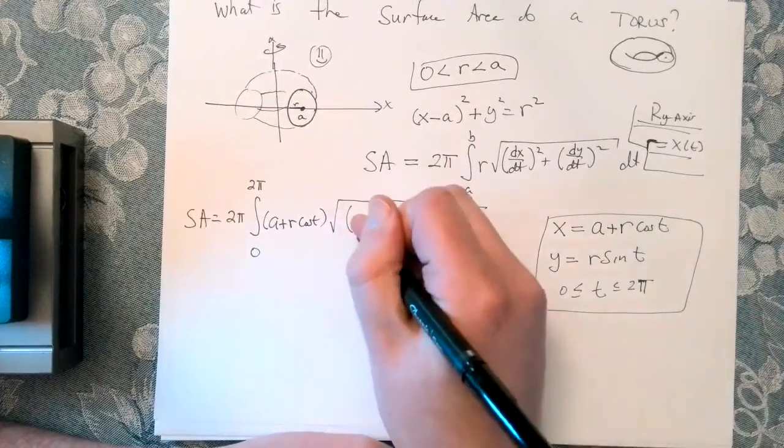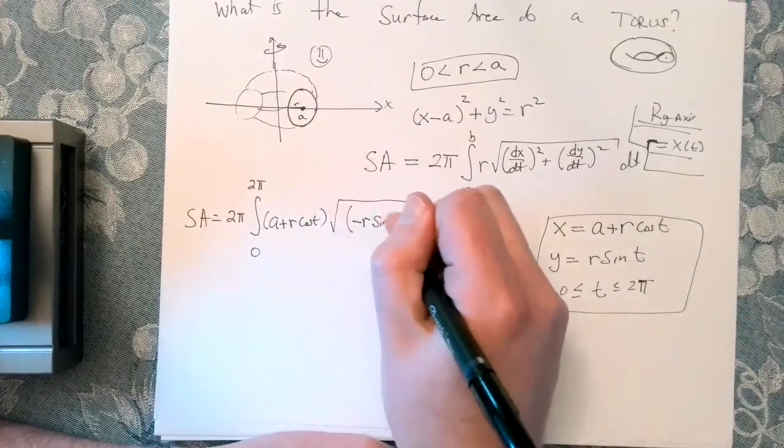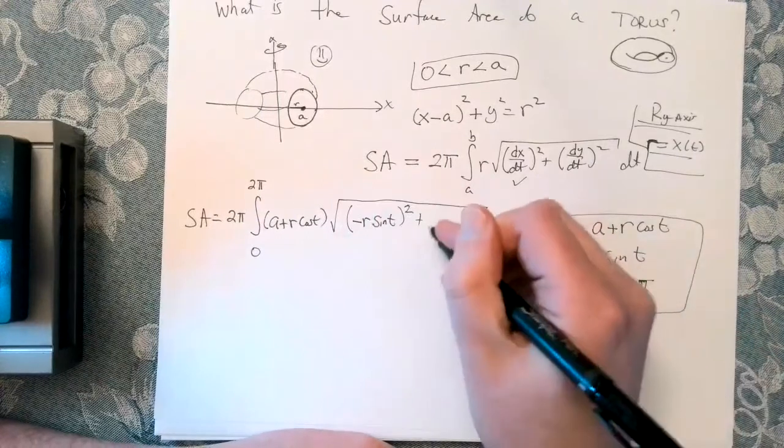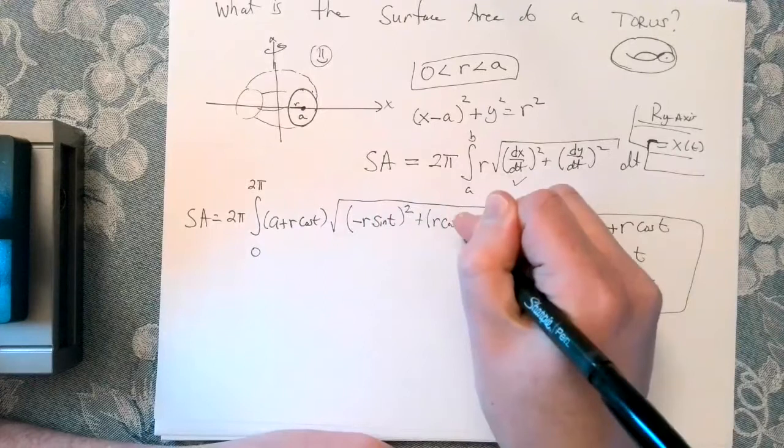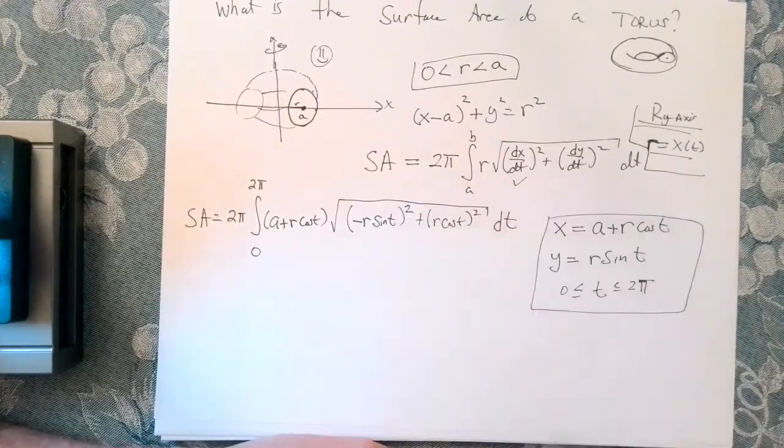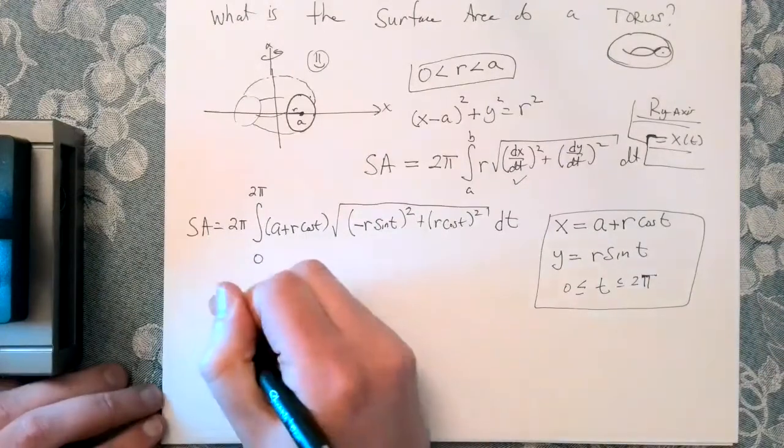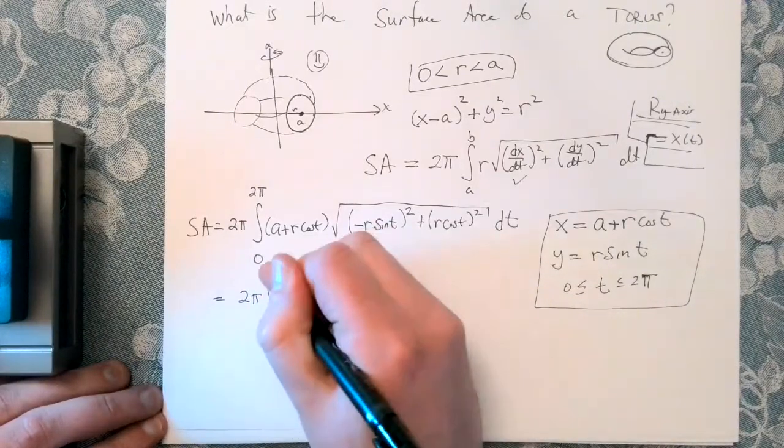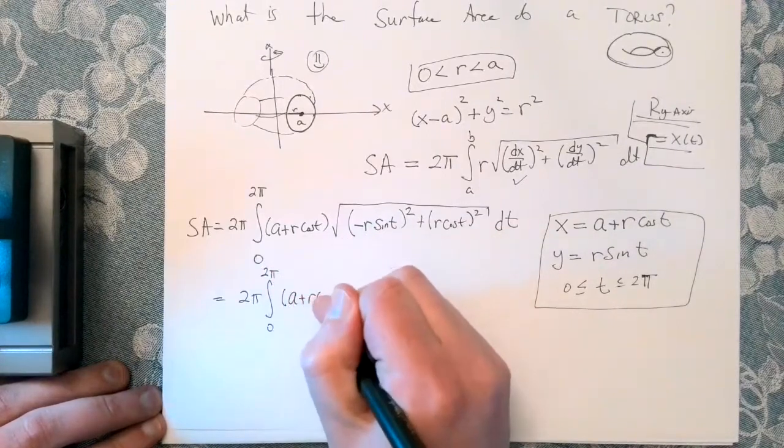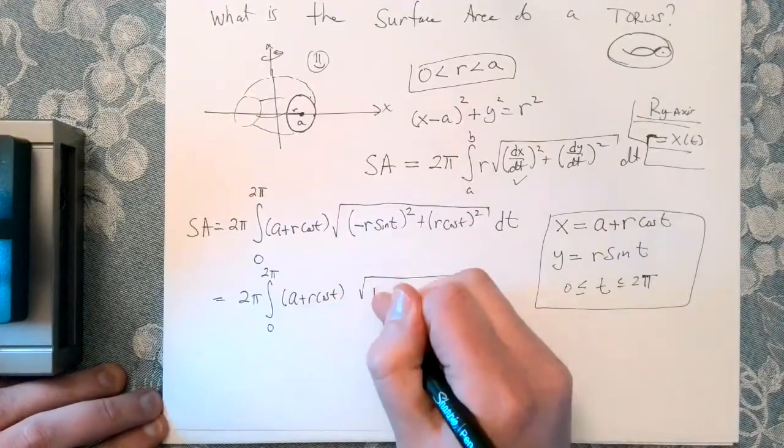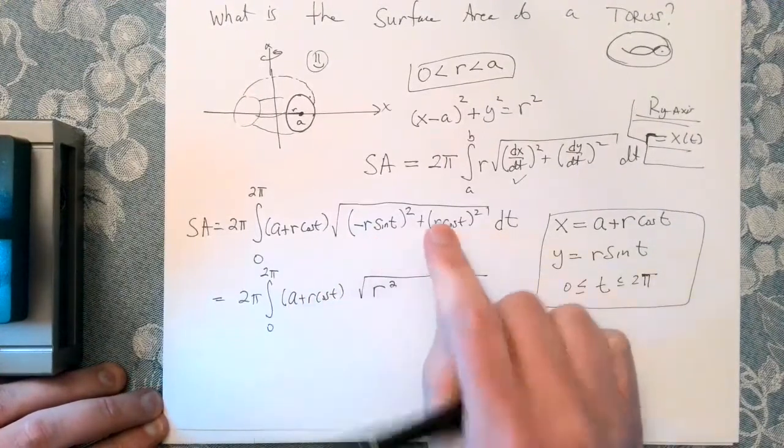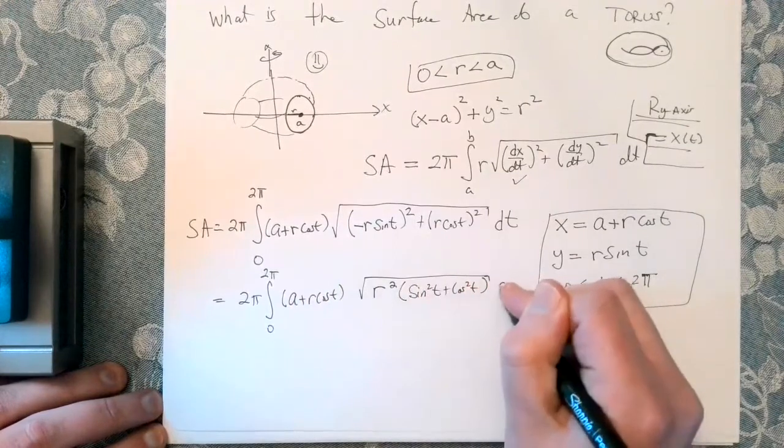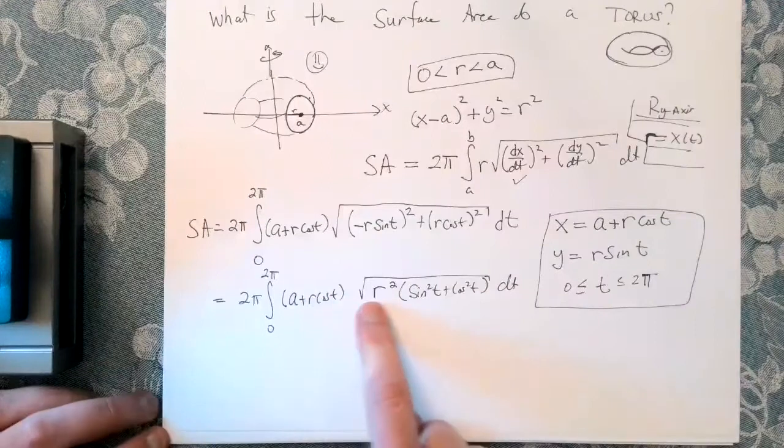So I need dx dt, so that should be negative r sine of t. So I took the derivative here in respect to t squared. So that takes care of this. And now I want dy dt squared. So that'll be r cosine of t squared dt. So I think this is going to be pretty nice because it looks like we're headed towards a Pythagorean identity. So we want to be on the lookout for that.